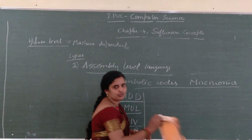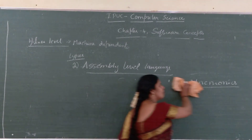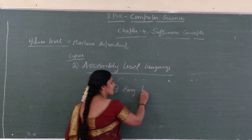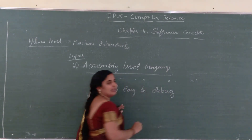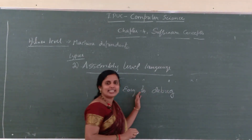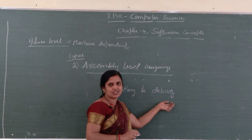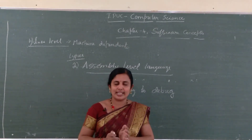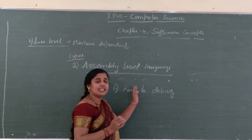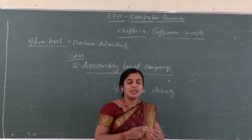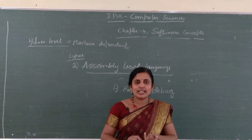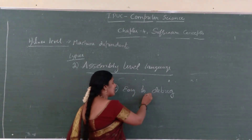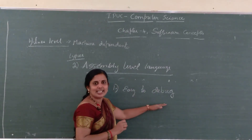What are the advantages of assembly level language? It is a little easier compared to machine level instructions. So I can say it is easy to debug. If I write assembly level language programs, I can identify errors more clearly compared to machine level instruction, because using mnemonics like ADD and SUB makes it easier to spot mistakes. Debug means checking the errors and removing the errors.